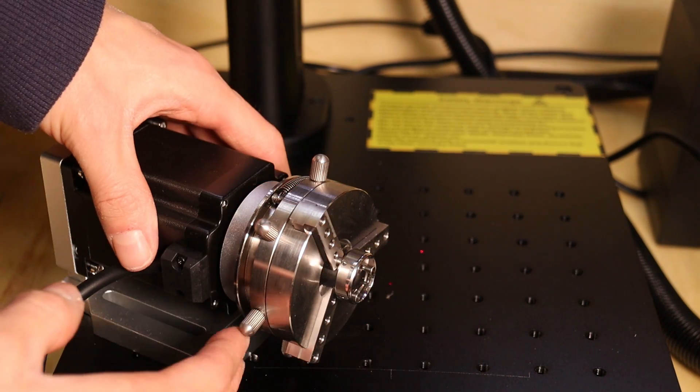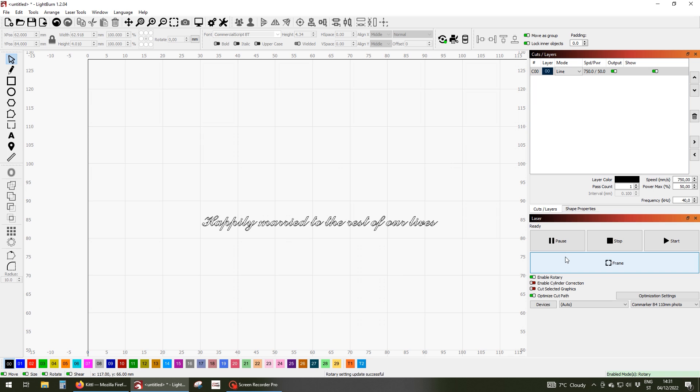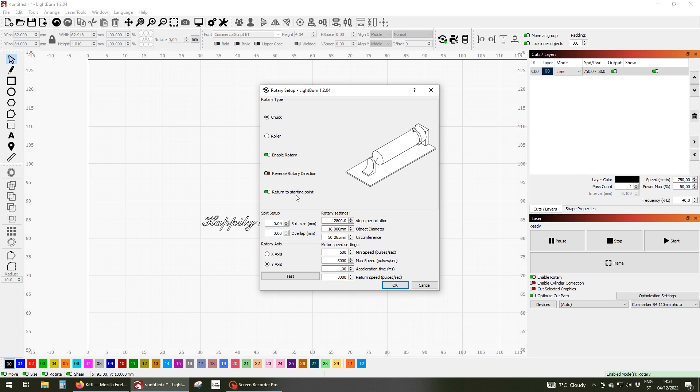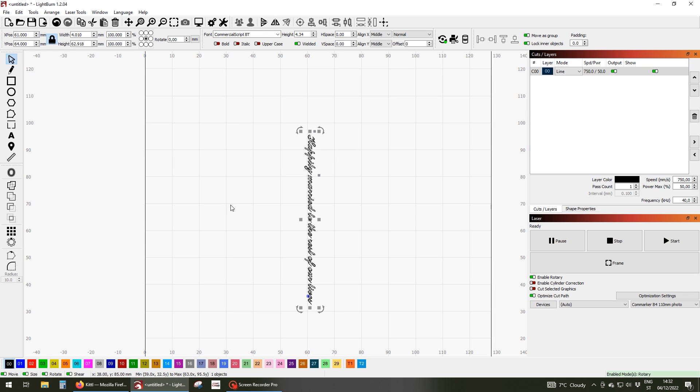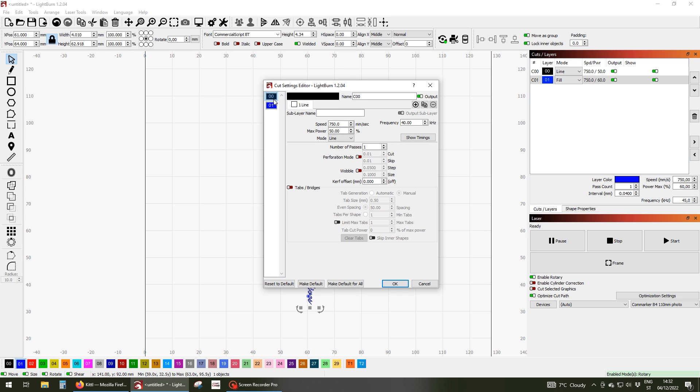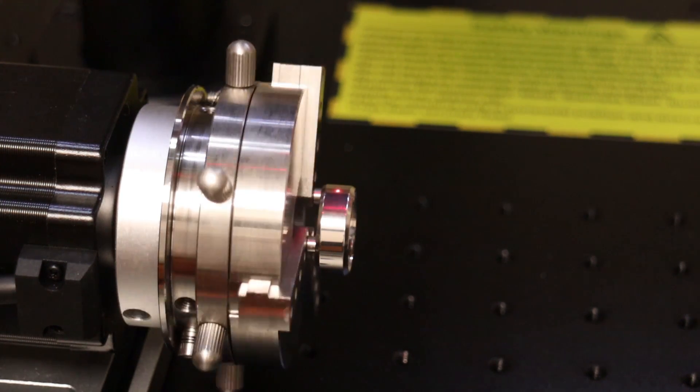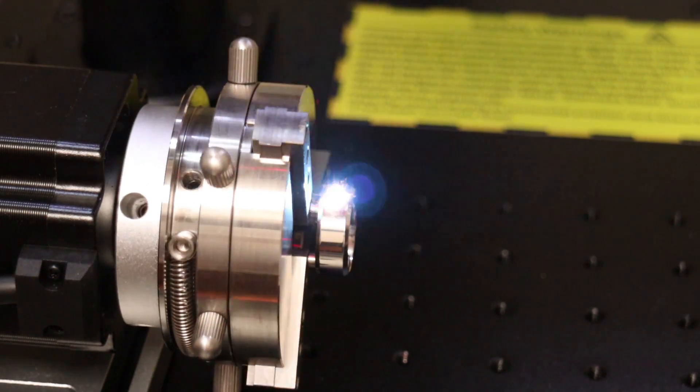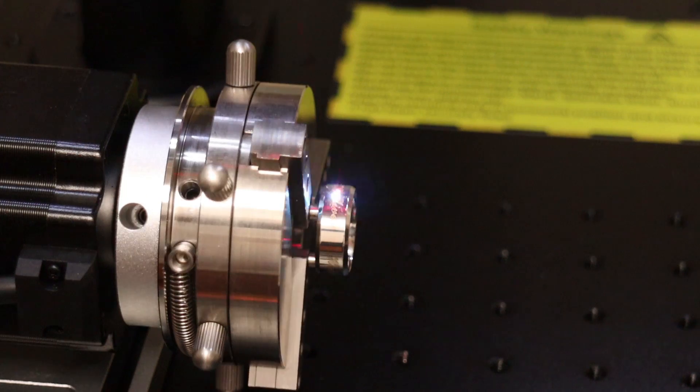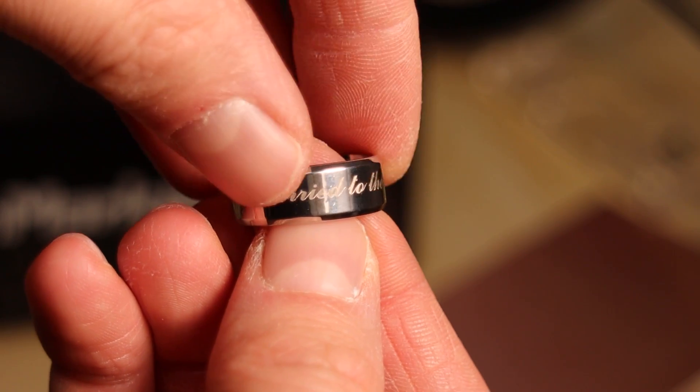Let's try to engrave a ring to see what level of detail you can get. The setup in Lightburn is simple. You need to select the chuck type and the correct rotary axis and the correct steps per rotation for this chuck type and of course set the object diameter. The black layer is the outline, and the blue layer is used to fill in the shapes. The engraving came out very nice.